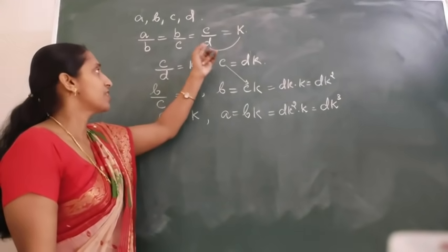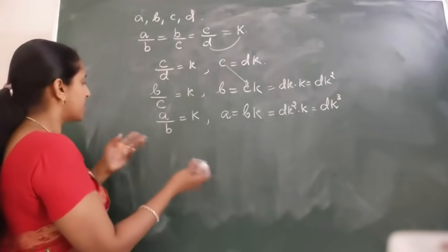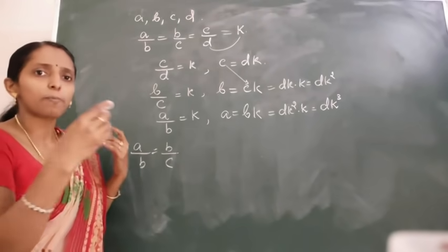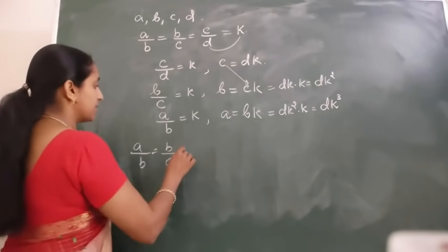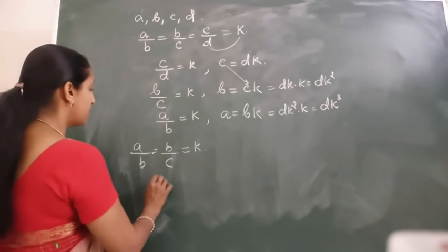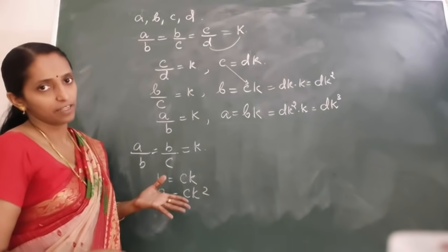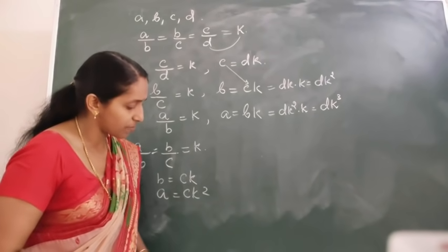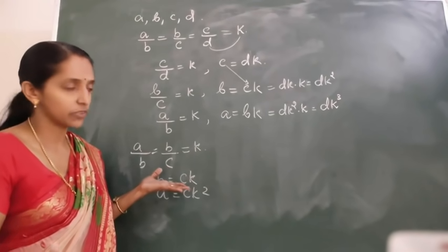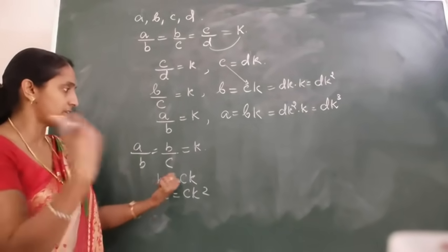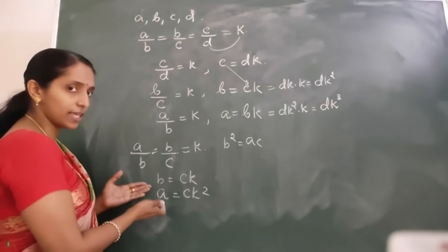For continued proportion with only A, B, C: A upon B equal to B upon C. You can apply both methods — either use B squared equals AC from last class, or equate to K. Starting from last ratio: B equals CK, then A equals BK equals CK squared. Either method works. Any method you can apply — after taking the values, substitute in LHS and RHS, simplify, and you get LHS equal to RHS.